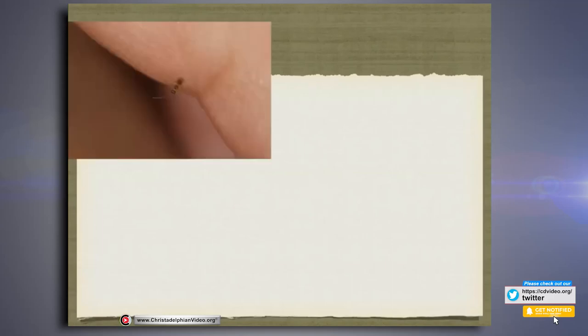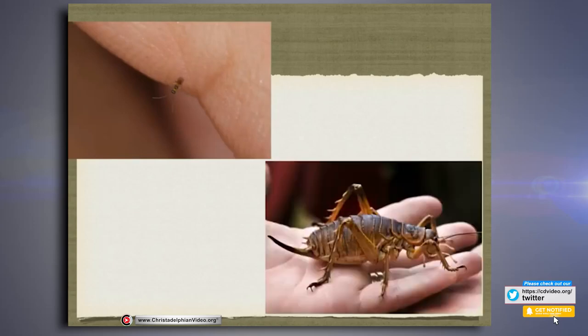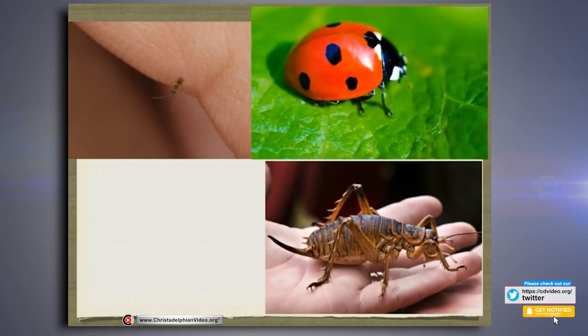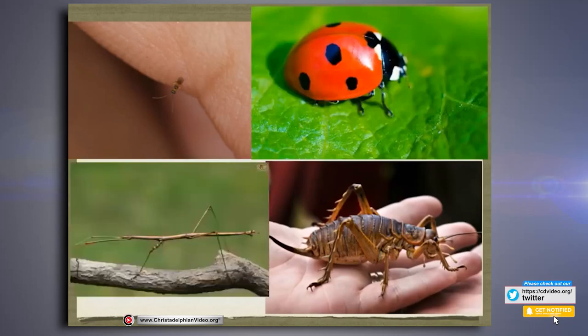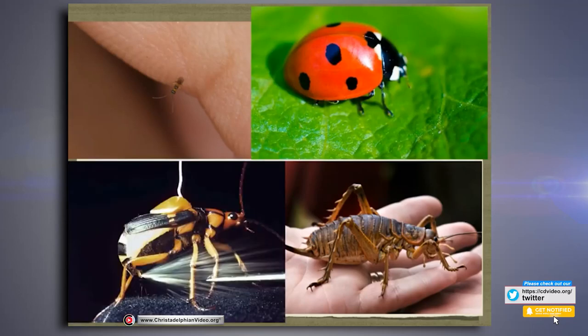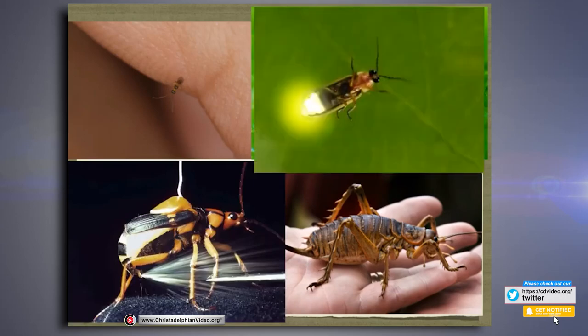If it all evolved from one organism, that would mean something as small as a fairyfly — which is 0.15 millimetres long — came from the same insect as the giant weta, which is 10 centimetres long. That means the roundness of the ladybird came from the same insect as the lankiness of a stick insect. And that the bombardier beetle, which is able to fire hot acid, came from the same insect as a firefly that is able to light up. Just six examples of the variation within insect species and how different they are.